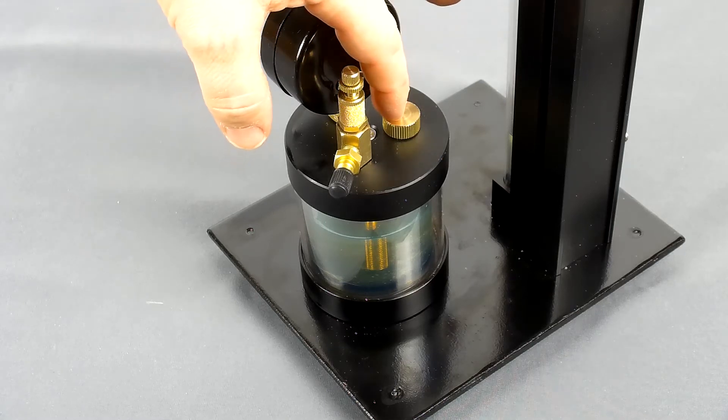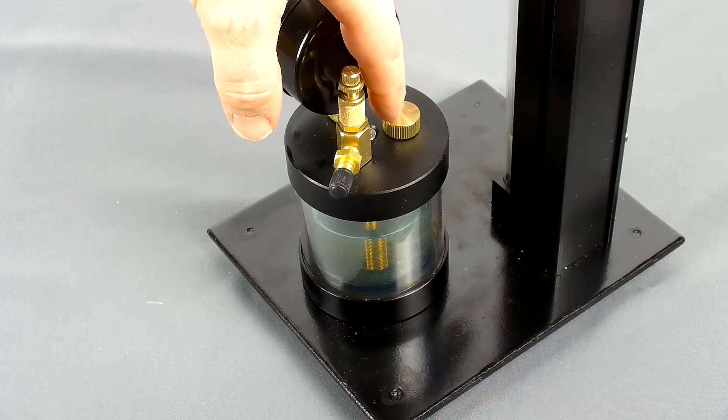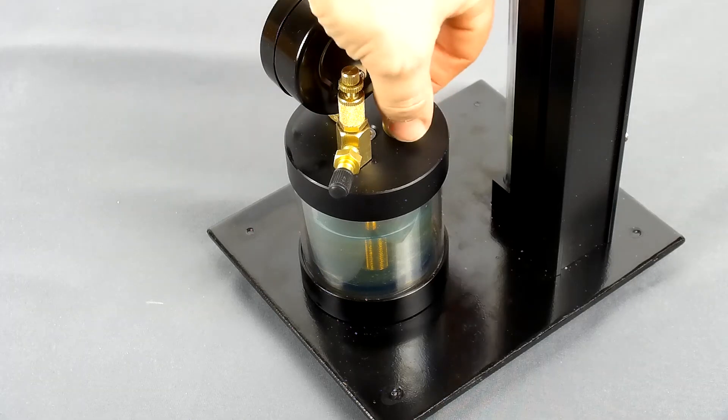Then there's the oil cap. You unscrew this, place in your hydraulic oil, and then place this back on nice and tight.